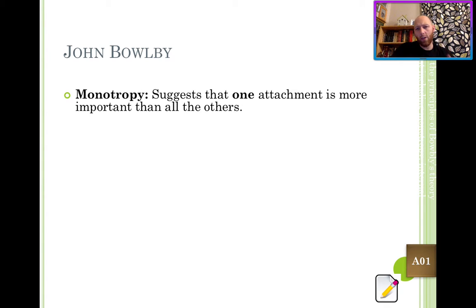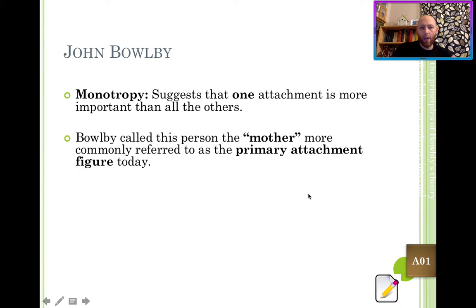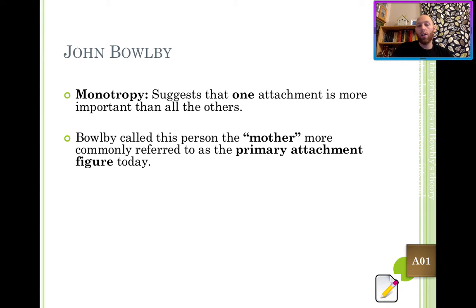One of the key concepts is monotropy. Monotropy refers to the possession of a single attachment figure that is more important to you than all the others. This is usually the mother. Bowlby called it the mother, though more recently we would tend to refer to the primary attachment figure, or PAF. That's because increasingly we understand that the mother does not hold the special place that Bowlby gave her, in the sense that she is not the only person that the offspring can form an attachment to.